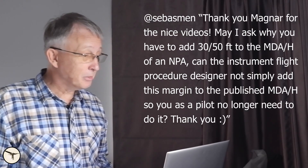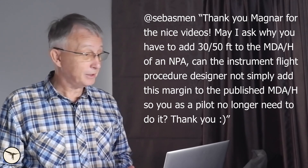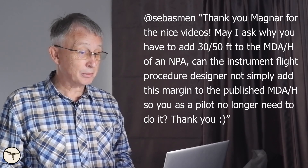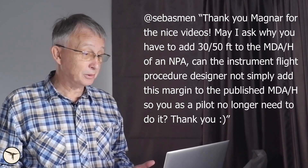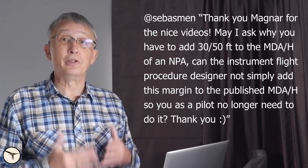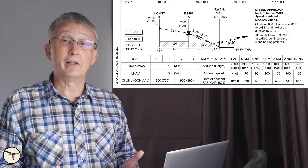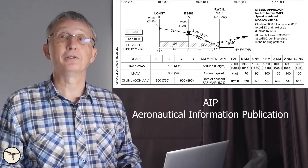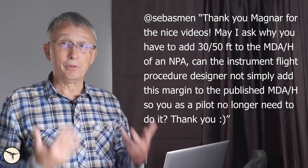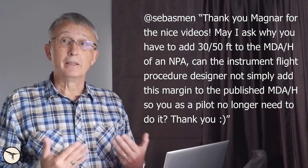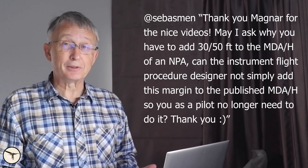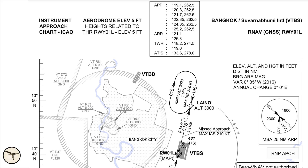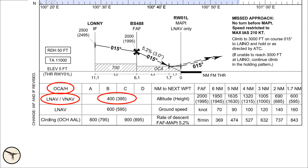Question 1: Thank you Magnar for the nice videos. May I ask why you have to add 30 or 50 feet to the MDA on a non-precision approach? Can the instrument flight procedure designer not simply add this margin to the published MDA so you as a pilot no longer need to do it? The procedure designer does not define the minima. The procedure designer will publish what they call the obstacle clearance altitude/height, and this is found on the charts in AIP, Aeronautical Information Publication. Then it's up to the operator to decide the operative minima based on this. For example, looking at an approach in Bangkok, RNP runway 01 left, you will see the OCA is 400 feet.